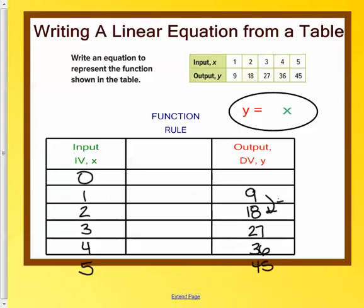So I know that my repeated addition is 9. Every single time I'm adding 9. So when I plug in a 1, I get a 9. When I plug in a 2, I get an 18. So if I go back 9, I'm at 0. So I know if it's repeated addition that the function rule is y equals 9 times x.